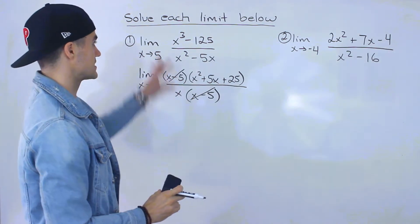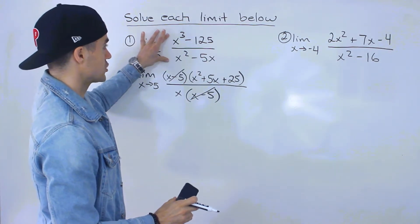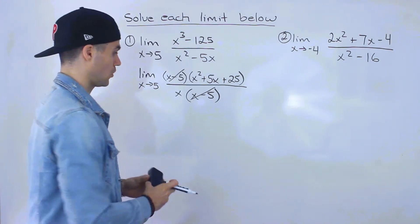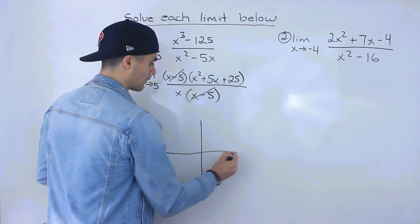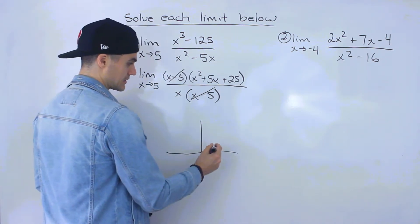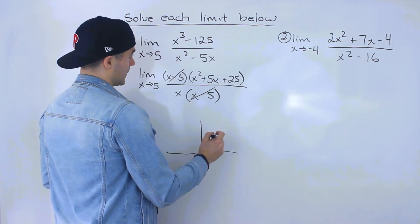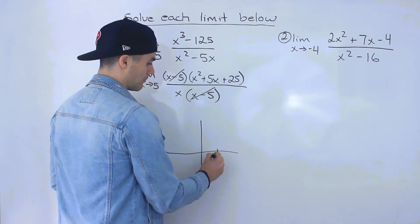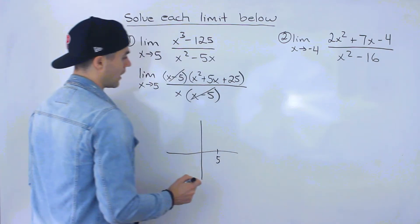And so what that means is for this function here, at an x value of 5, there's going to be a hole. OK? So I don't know how the function necessarily looks like. We can graph it, of course, using tools that we know. But that's going to take quite a while.